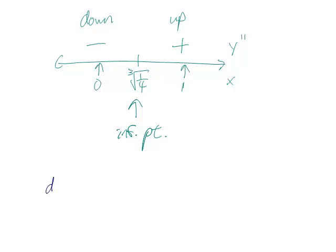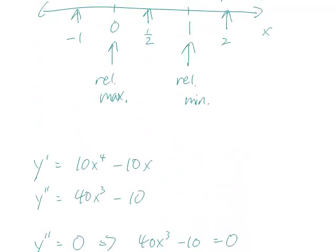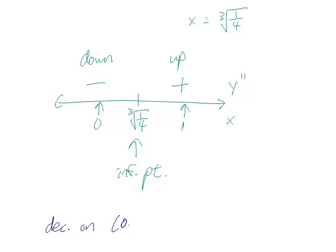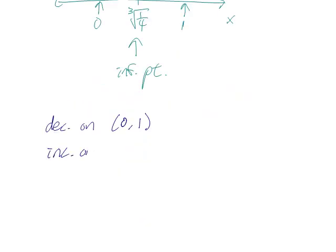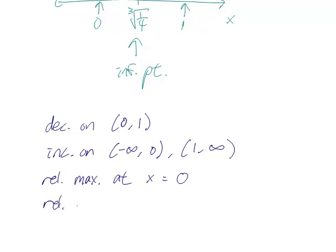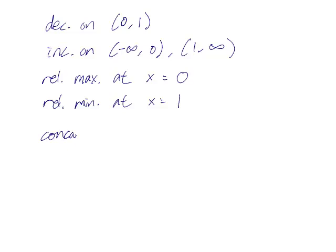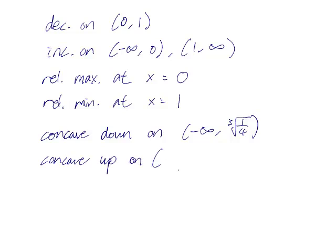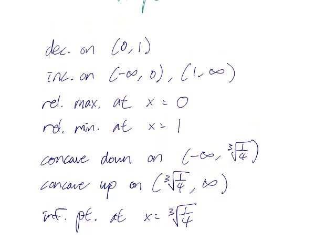Let's write down the answer. The function is decreasing on the interval 0 to 1. It's increasing on negative infinity to 0 and 1 to infinity. There's a relative max at x equals 0 and a relative min at x equals 1. Finally, it's concave down on negative infinity to the cube root of one quarter, concave up on cube root of one quarter to infinity, and the inflection point is at x equals the cube root of one quarter.